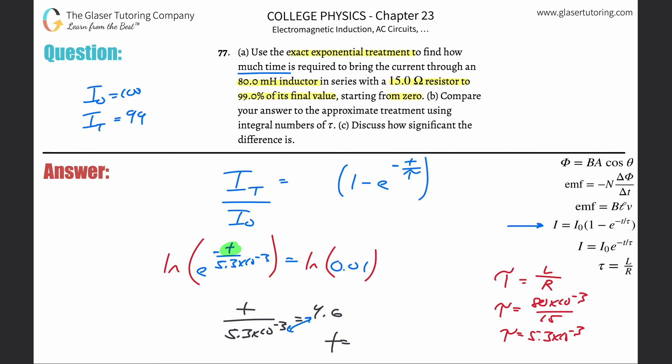The time value here is going to be 5.3 repeating times 10 to the minus 3 multiplied by our 4.6. I'm using all exact answers. So here we get a value of about 2.46 times 10 to the minus 2 seconds.